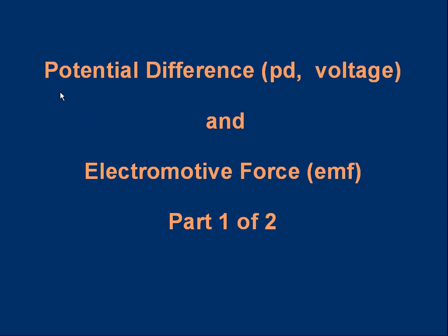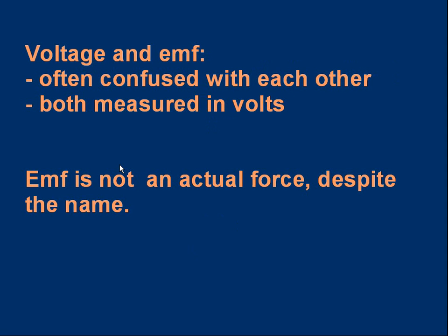In this lesson we're going to take a look at potential difference and electromotive force. Potential difference is often abbreviated to PD and often referred to as voltage. Electromotive force is often abbreviated to EMF. In this part of the lesson we're going to look at the basics, and in part two we're going to look at some calculations. Voltage and EMF are often mixed up with one another — people talk about the voltage of a battery but they really mean the EMF of the battery. The confusion arises partly because both voltage and EMF are measured in volts, and also because they have very similar meanings.